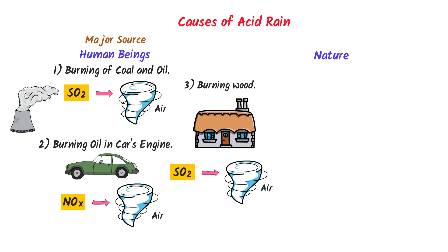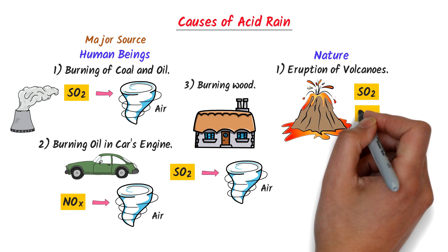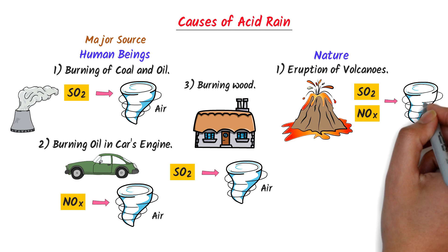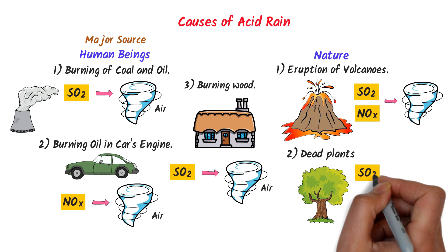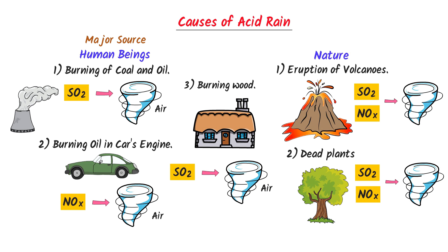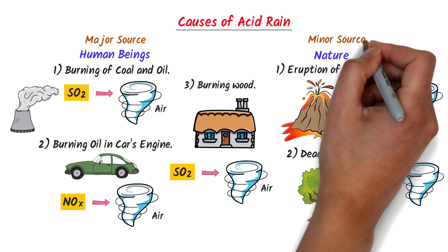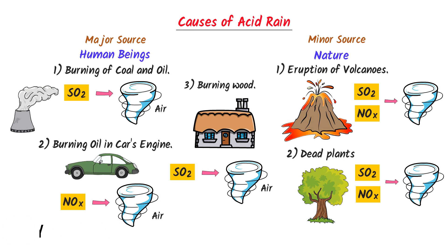On the other hand, eruption of volcanoes also produces sulfur dioxide which can cause acid rain. Secondly, dead plants or vegetables also produce certain gases which can cause acid rain. Remember that natural processes are the minor cause of acid rain. Thus, anything that produces sulfur dioxide and oxides of nitrogen is considered to be the main cause of acid rain.